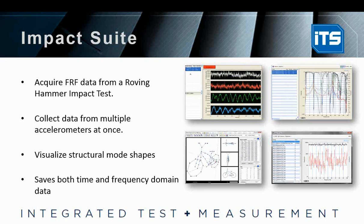Some other applications: Impact Suite. We are going to do a demonstration over this one later, but I'll pull it up to show you real quick. Basically, the Impact Suite is for acquiring FRF data from a roving hammer impact test. It's going to let you trigger by hitting it with a modal hammer in order to get your vibration data. It lets you collect data from multiple accelerometers at once. We actually had a bike in our office that we put accelerometers all along, hit it with a modal hammer, and used this Impact Suite to generate an image of the bike. You'll be able to visualize the different structural mode shapes of that bike through the use of this suite. This does save both time and frequency domain data.